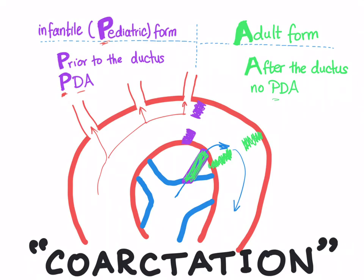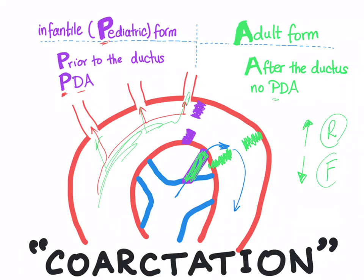However, there is another problem. With the narrowing here, you will have more blood going to the upper half of the body and less blood going to the lower half. So you will have hypertension in the upper extremity and hypotension in the lower half of the body. The radial pulse and the femoral pulse may not be equal — you may find the radial pulse stronger than the femoral pulse.